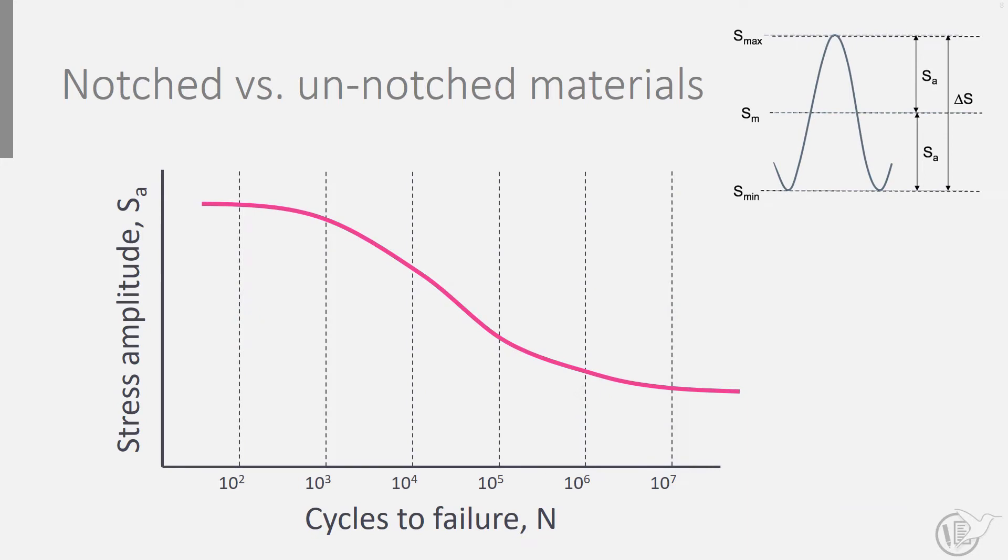The S-N curves illustrated here contain two asymptotes. The upper asymptote relates to the ultimate strength of the material. The static test effectively is then treated as a single fatigue load cycle. The lower asymptote is the fatigue limit. This means that cyclic loading below this limit does not cause any failure of structure or material.